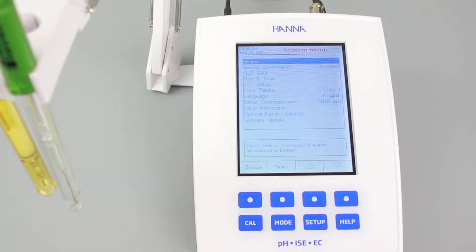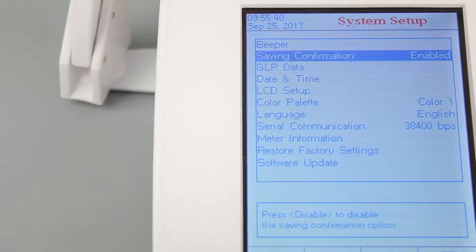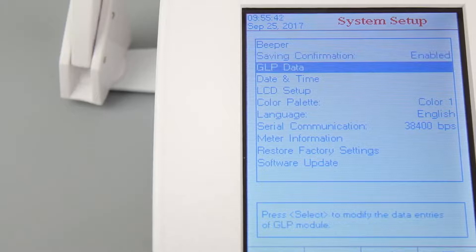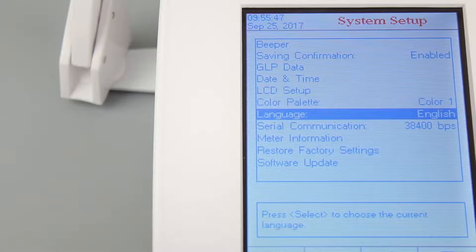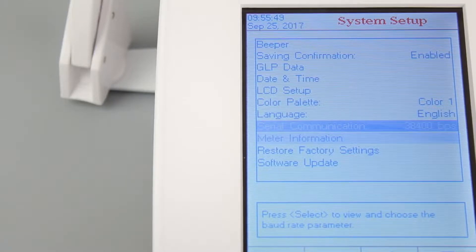This area of the menu lets you set the date and time, GLP data, and LCD settings. You can also view information about your meter and other operational preferences that you can set to your liking.